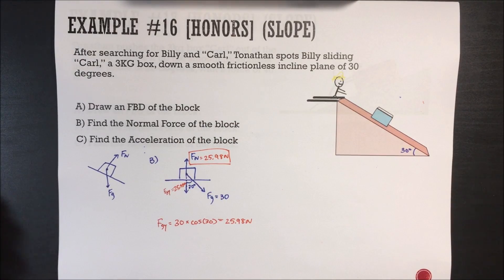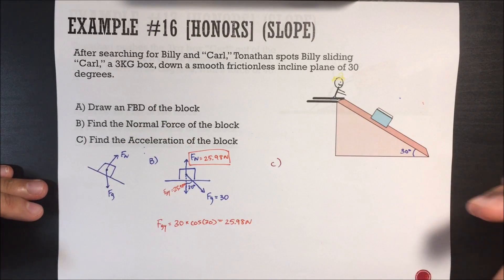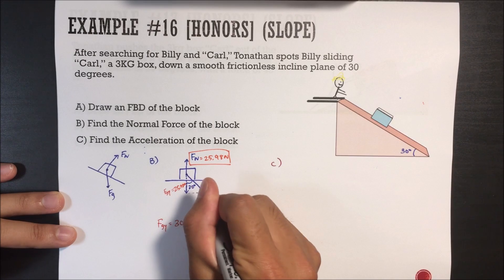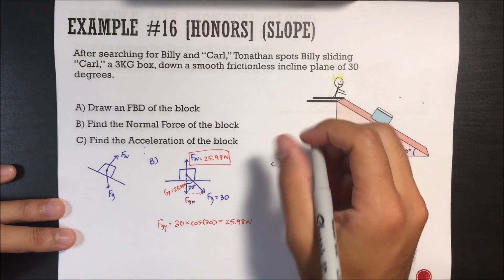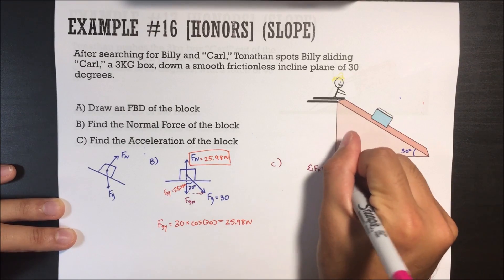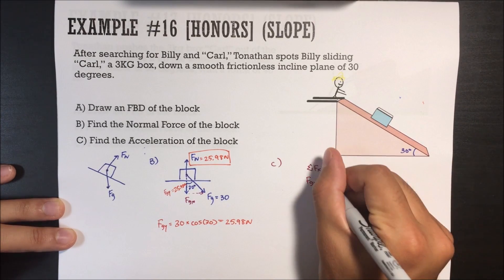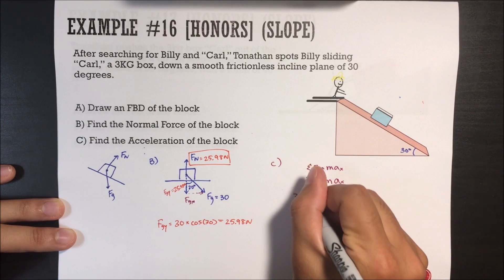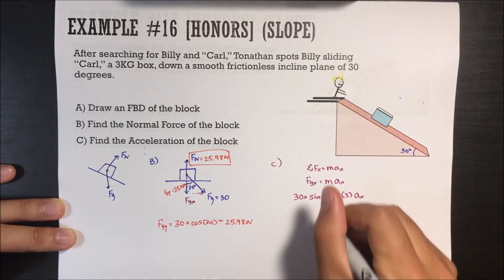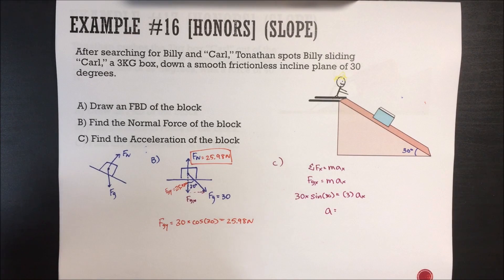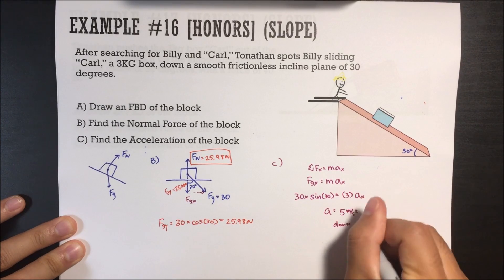Part C is find the acceleration of the block. What force is allowing this block to accelerate? It's the force of gravity in the x direction. The y direction everything cancels out, but in the x direction it's moving. So: sum of all forces in x equals mass times acceleration in x. The only force in the x direction is the force of gravity in x, so force of gravity in x equals mass times acceleration in x. That is 30 times sine of 30, which is one half, times mass of 3. This gives us 5 meters per second squared down the incline.